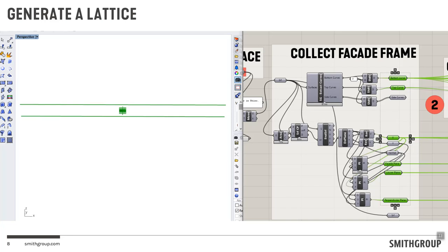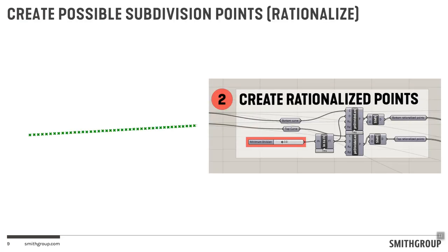When I say generate a lattice, I'm referring to the fundamental pieces. I take any surface, isolate out the bottom curve, the top curve, and get key vectors — so I have a frame of reference. No matter what orientation the surface is in, I've defined my coordinate system relative to the surface. I isolate the key curves I need, the key vectors, and the planes themselves, so I can use them later for different things. This is a standard practice I do: build out the basic building blocks that define my surface.